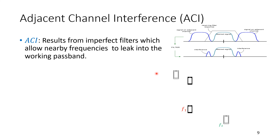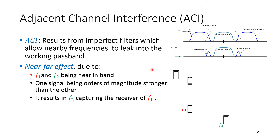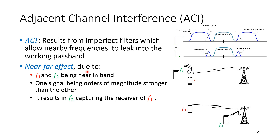Now moving to the second type: adjacent channel interference (ACI). ACI results from imperfect filters which allow nearby frequencies to leak into the working passband. For example, consider a desired channel: because perfect filters do not exist, signals on adjacent channels will leak in. These leakage effects are usually small, but the problem becomes more dominant with the near-far effect.